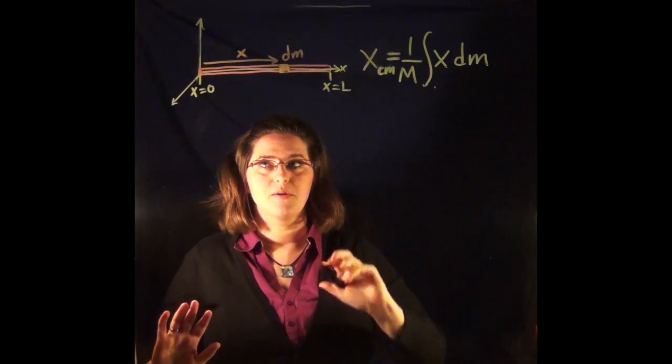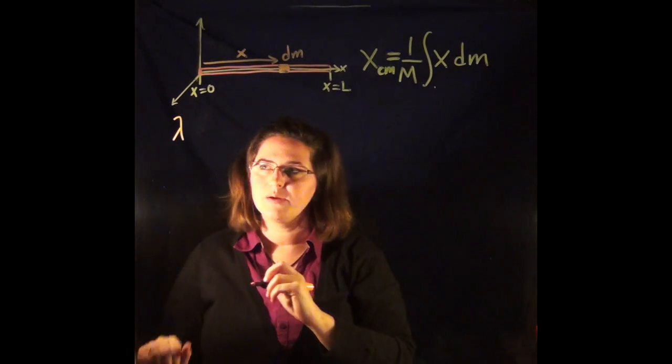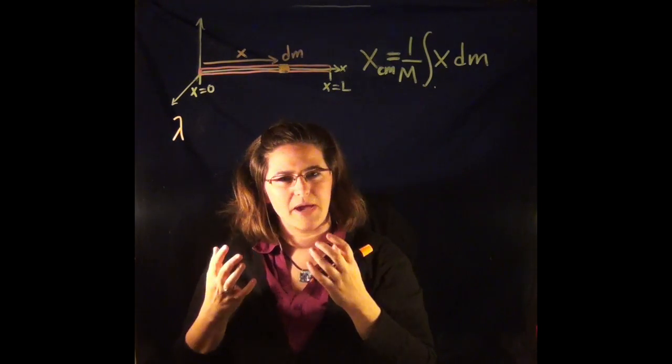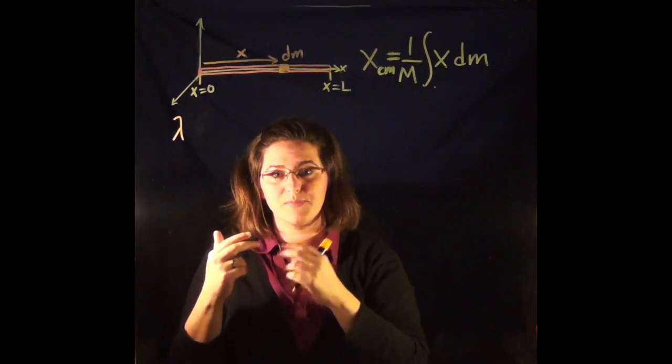First, we're going to define mass per length, lambda. Lambda is a mass per length. It's like a mass density, except not volume. It's not mass per volume. It's mass per length.